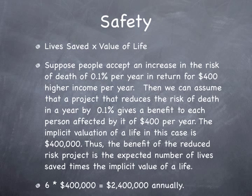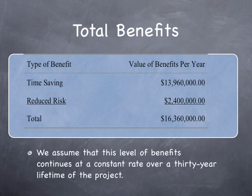Safety can be monetized by looking at lives saved multiplied by the value of life. Suppose people accept an increase in the risk of death of 0.1% per year in return for $400 higher income per year. Then a project that reduces the risk of death by 0.1% gives a benefit of $400 per year to each person affected — an implicit valuation of life of $400,000. The benefit of the reduced-risk project is the expected number of lives saved times the implicit value of life: 6 times $400,000 equals $2.4 million annually. Summing time savings and reduced risk gives total benefits of $16.4 million per year.